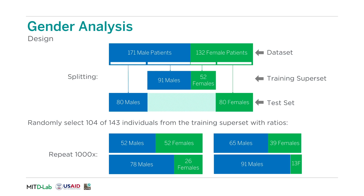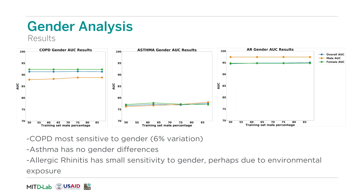Starting with gender bias analysis, our training datasets and test dataset were divided as shown. Male-female representativeness was varied from 50-50 to 87.5 to 12.5. The results for predictive accuracy for allergic rhinitis, asthma, and COPD are shown on the slide. The data shows no significant decrease in algorithm accuracy as gender imbalances are introduced in the data. This may be surprising considering how we have highlighted the principle of representativeness throughout this course. However, it is important to note that protected variables do not necessarily affect outcome variables, and the lack of representativeness may not always introduce bias or unfairness into models.